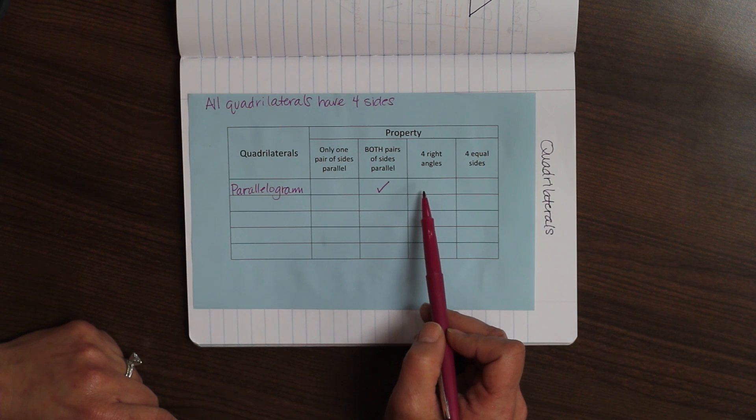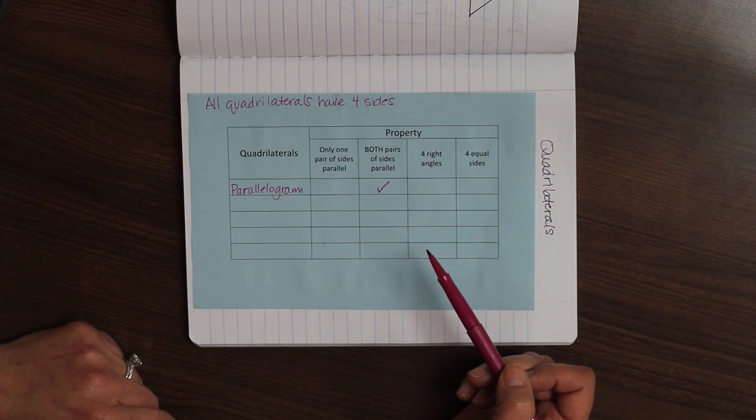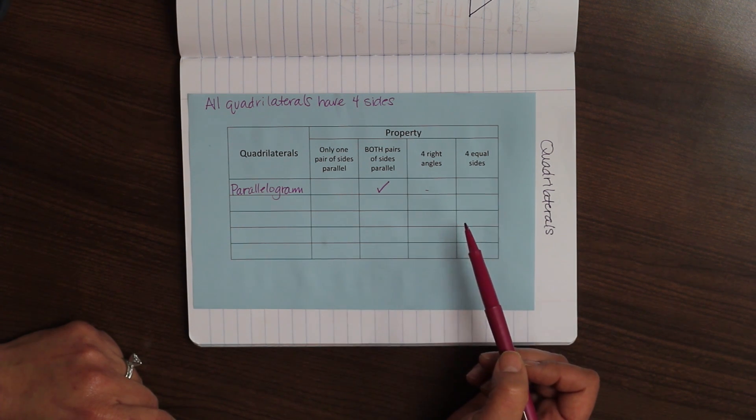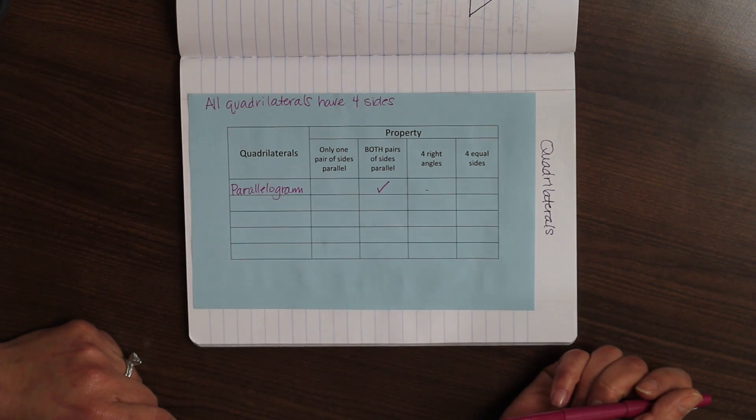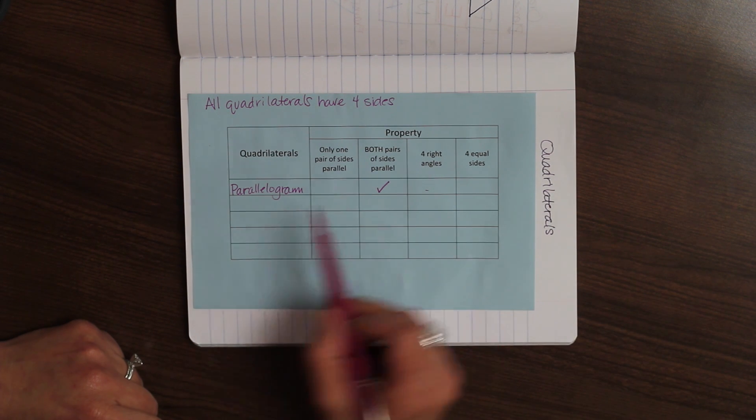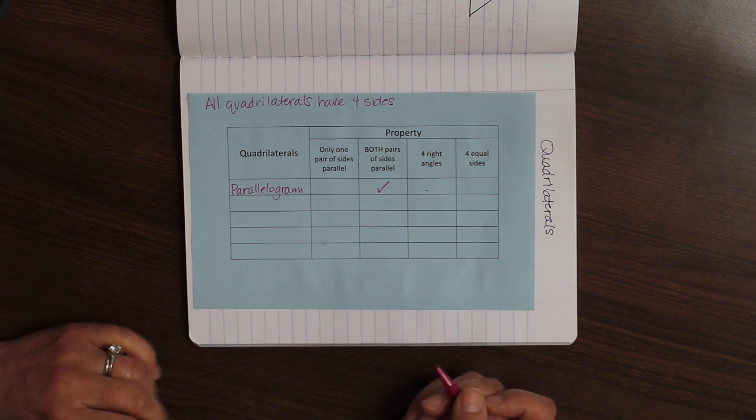Four right angles. Now, a parallelogram can look like a rhombus and not have right angles. So, that's not true. And four equal sides. And that is also not true because a rectangle does not have four equal sides. And that's a parallelogram. So, we're just going to say that parallelograms, one of the properties is that they have both pairs of sides are parallel.